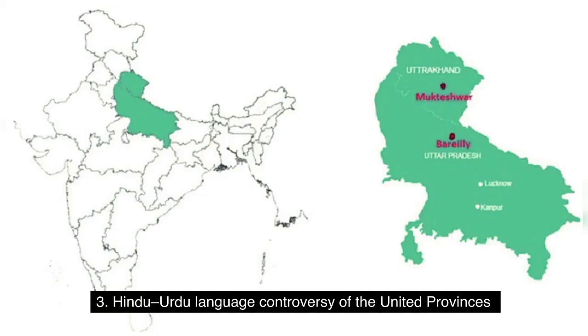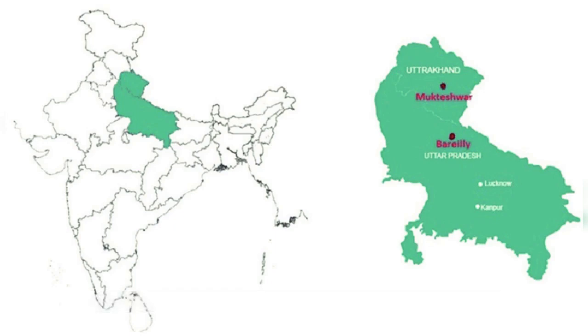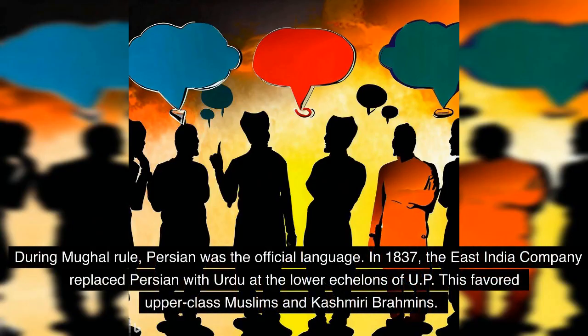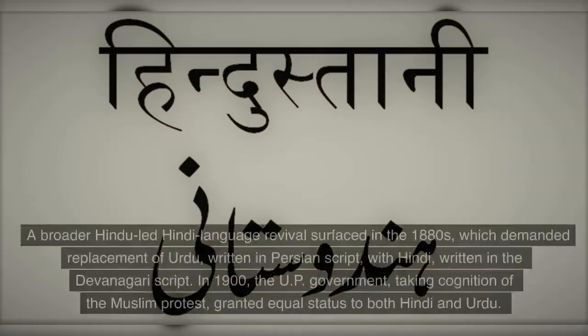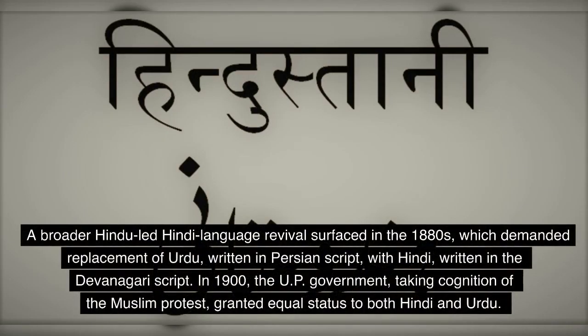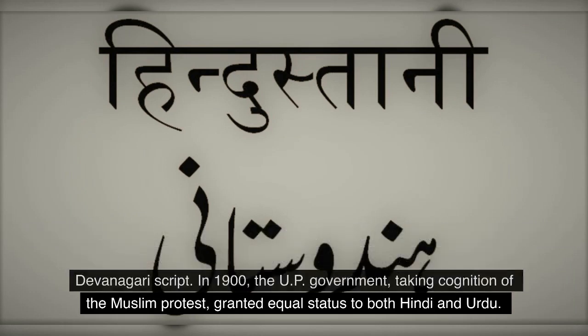Point 3: The Hindu-Urdu language controversy of the United Provinces. During Mughal rule, Persian was the official language. In 1837, the East India Company replaced Persian with Urdu at the lower echelons of UP, which favored upper-class Muslims and Kashmiri Brahmins. A broader Hindu-led Hindi language revival surfaced in the 1880s, which demanded replacement of Urdu, written in Persian script, with Hindi, written in the Devanagari script. In 1900, the UP government, taking cognition of the Muslim protest, granted equal status to both Hindi and Urdu.